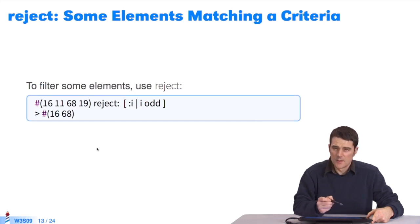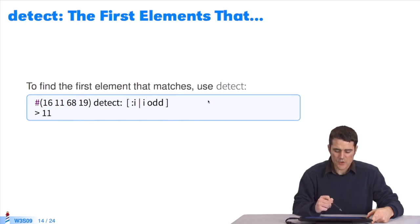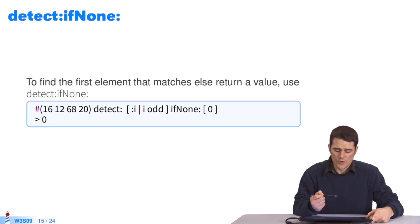You may use other types of iterators, such as reject. I want to get rid of the odd elements of the collection. In the results, I'll only have even elements left. Or I want to use detect. I want to detect the first element that matches a criterion. The value of the block must be true. I want the first odd element of the collection, 11. Sometimes you want to detect the first element that matches a criterion. If there isn't any, you want a default value. Detect if none. If there is no match, it will return the value of this block, which is zero.